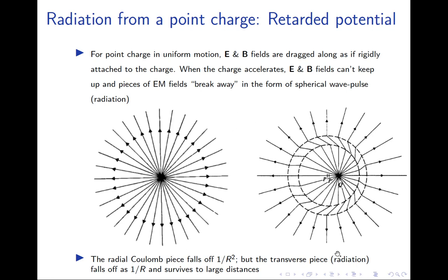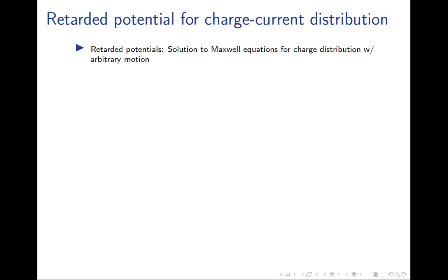So somebody observing from an infinite distance will be able to see the radiation coming out. This was a pictorial way of looking at it. Now let's do the math and we'll see this thing happening. Before that, we need the concept of something known as a retarded potential.